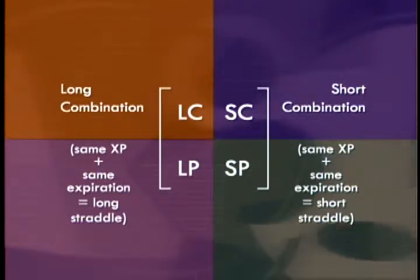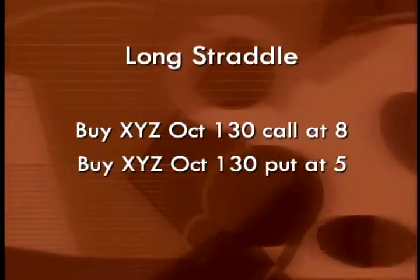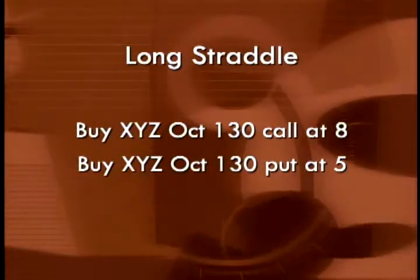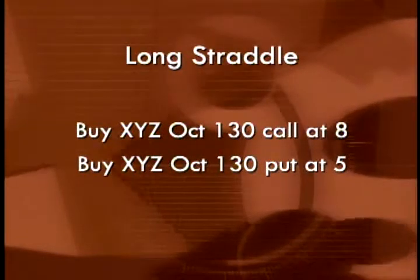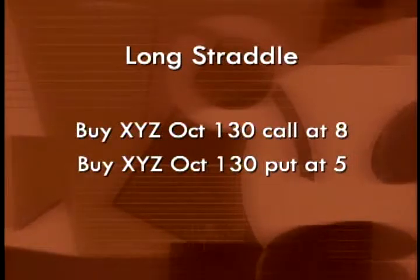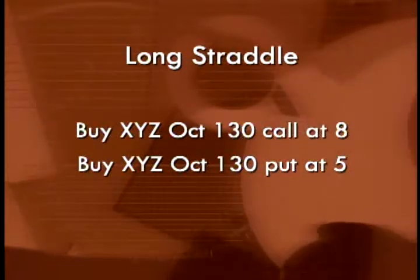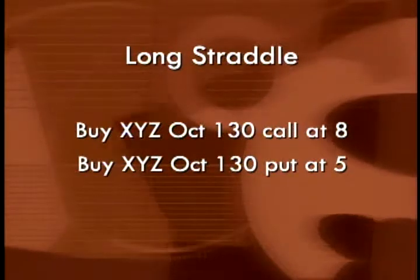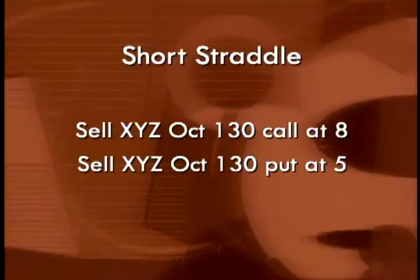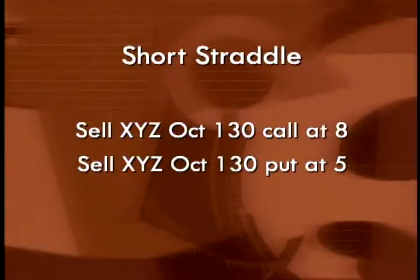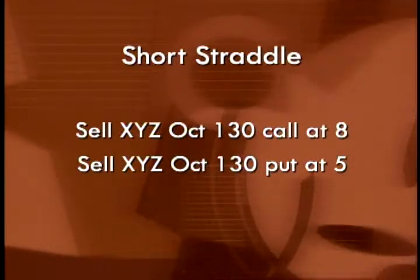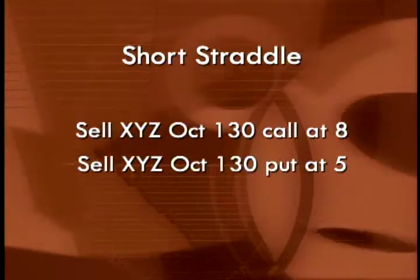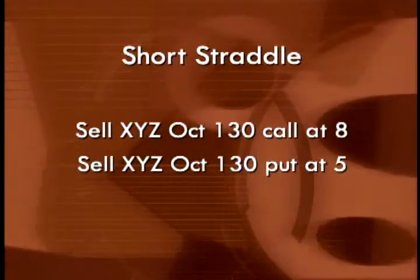We earlier looked at a long straddle consisting of a long call and a long put — they have the same strike and expiration date, October 130 and October 130. It's a long straddle because we're buying both options. If we sell both options instead of buying them, then we would have what's called a short straddle.